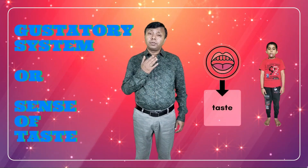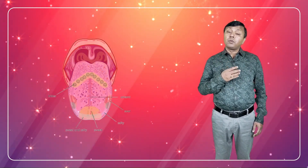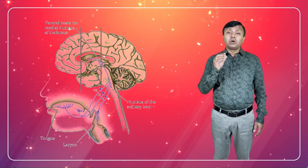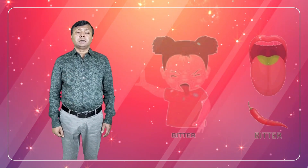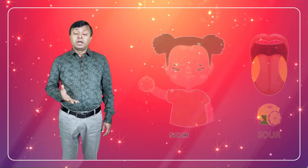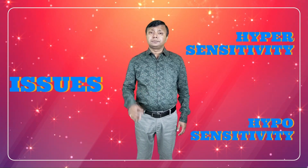Gustatory system, or sense of taste. Located within our mouth, our gustatory system gives us information about what we taste. Taste receptors are clustered in the mouth, tongue and throat. We taste using these cells along with the gustatory cortex located in the brain and several cranial nerves. Through this we receive 5 basic tastes: salty, sweet, bitter, sour and umami. Some of the issues related to this system are: sensitivity to brushing or food textures; and mouthing non-food objects or exploring textures such as chewing on pencils or clothing.